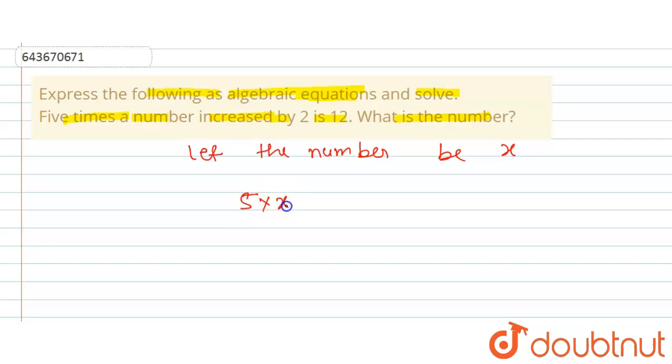A number increased by two. Here, this is increased by two, that is plus two, is 12. So this is equal to 12. This can be written as 5x plus 2 is equal to 12. Now we will simplify this.